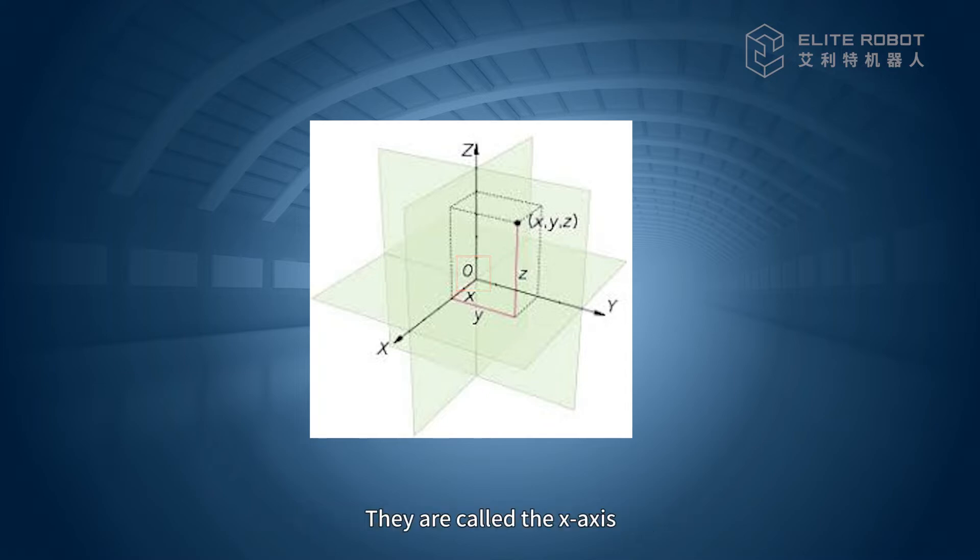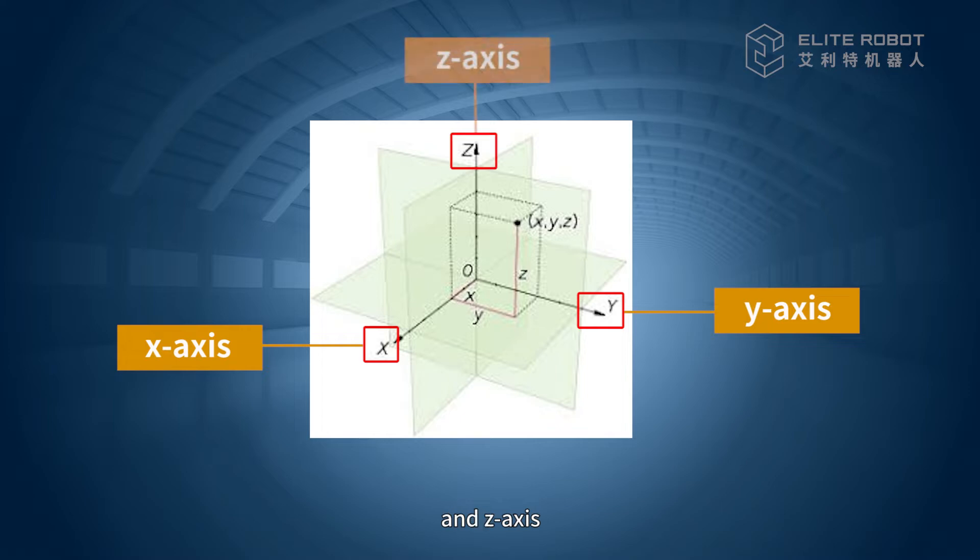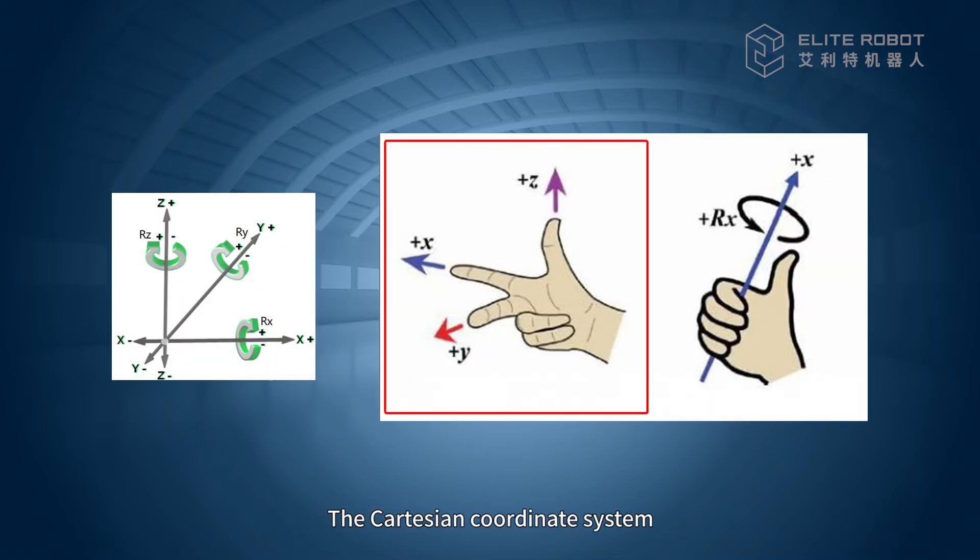They are called the x-axis, the y-axis, and the z-axis. They make up the coordinate axes collectively. The xy plane is set as the horizontal plane by default with the z-axis acting as a plumb line.